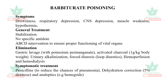For elimination: potassium permanganate, gastric lavage, activated charcoal 1 gram per kg. Also urinary alkalinization, diuresis, furosemide, hemoperfusion, and hemodialysis.